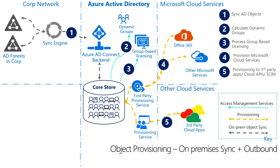In step five, we have a provisioning backend service to integrate users to third-party applications in the cloud. This component abstracts away the complexities of calling the SaaS applications' provisioning APIs, such as ServiceNow or Salesforce. The provisioning service supports SCIM, so any application that follows that standard can integrate easily with the flow. We want to encourage you to connect your third-party apps to get the full benefits of Azure AD, in addition to single sign-on.